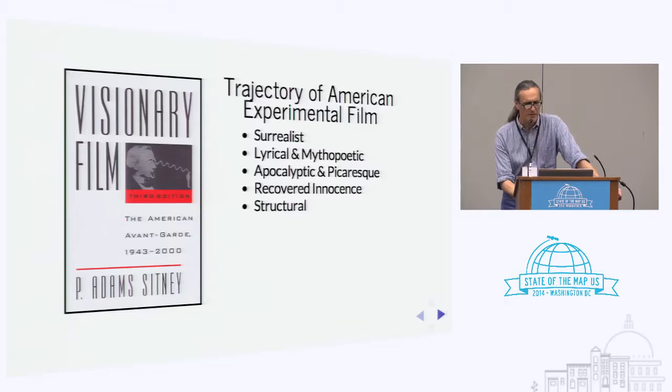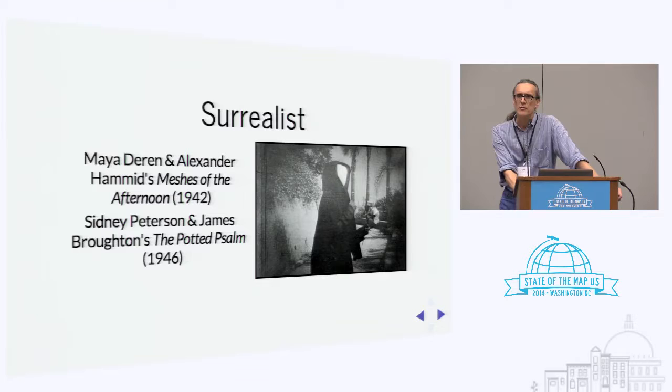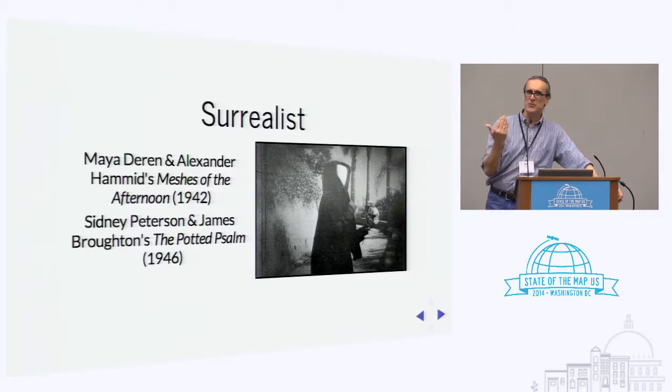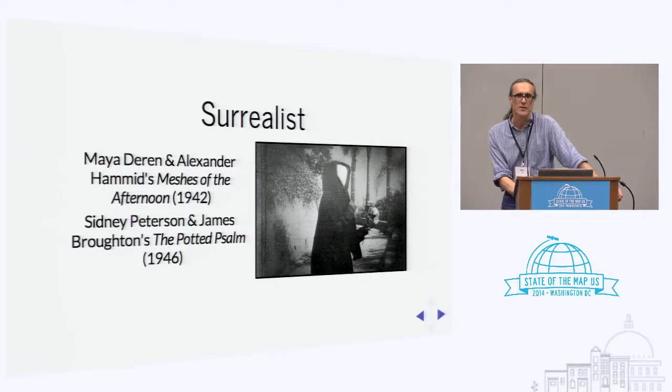People started making what are known as structural films, which is what I'm going to talk mostly about today. If you've seen any experimental films, chances are good you've seen Maya Deren's 'Meshes of the Afternoon.' There's a hooded figure that appears throughout the film, and at one point the figure turns and has no face but has a mirror — which is still really shocking the first time you see it. This film is from the 40s and thousands of students have remade it now.